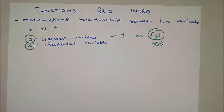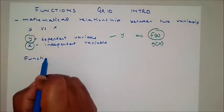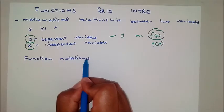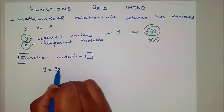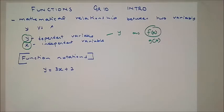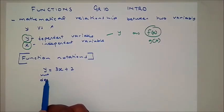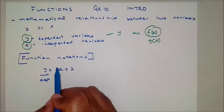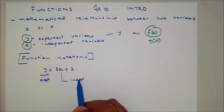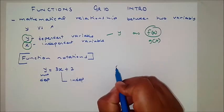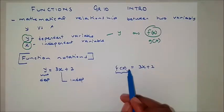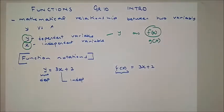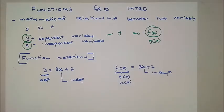Let's look at function notation. When we're first introduced to this in grade 10, you might see a function written as y equals 3x plus 2. Here y is the dependent variable and x is the independent variable. This can also be written as f of x equals 3x plus 2. It might be f of x, g of x, h of x — whatever of x — it just shows that y depends on x.